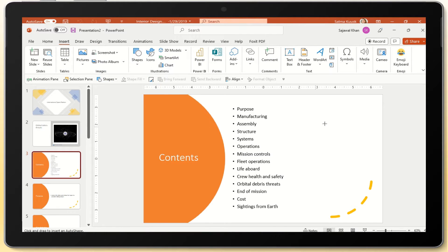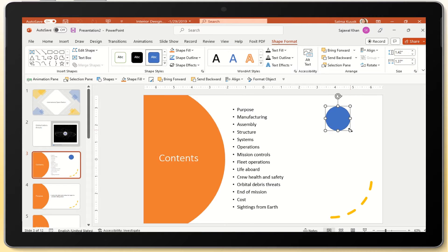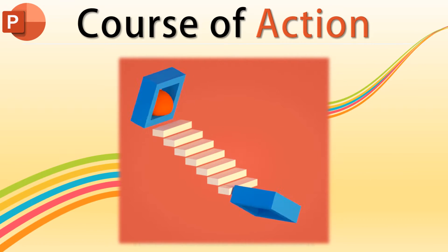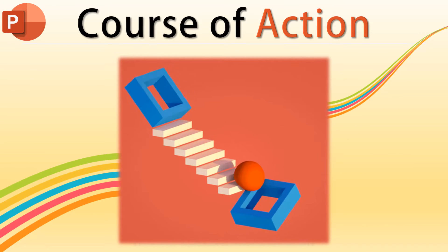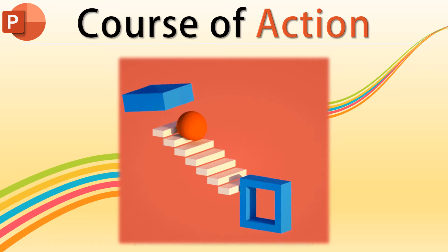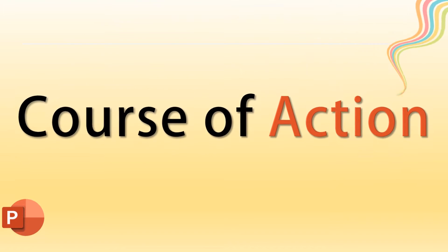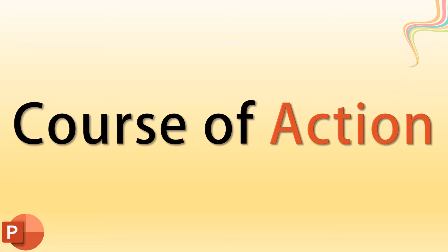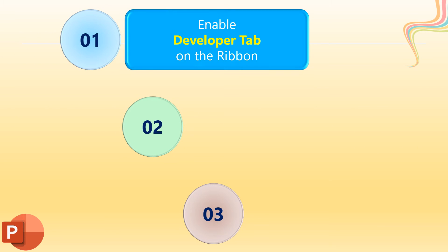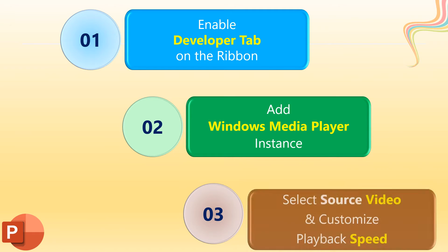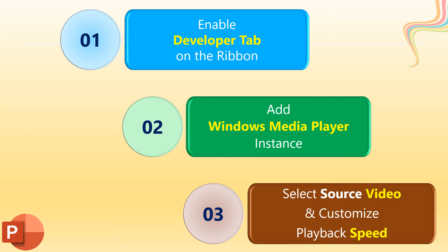There are instances where you may need to embed a fast motion video in your work. Steps to increase or decrease the playback speed of a video on PowerPoint: Enable Developer tab on the ribbon, add a Windows Media Player, select Source Video and customize playback speed.